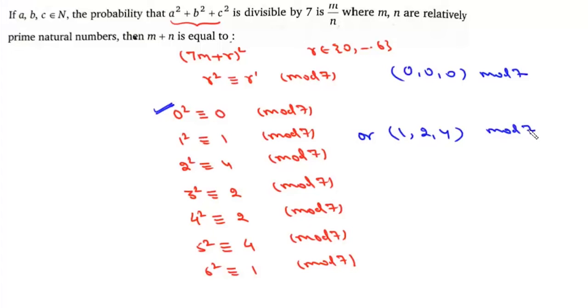So for this first case, the required probability will be 1/7³. Now for this second case: